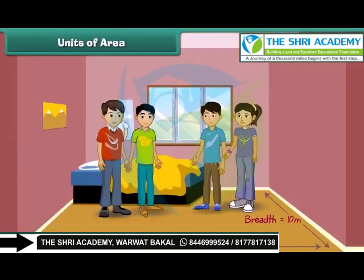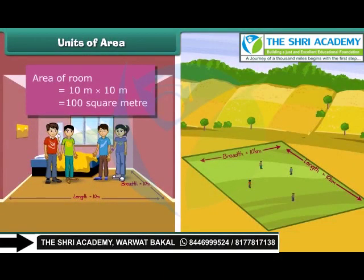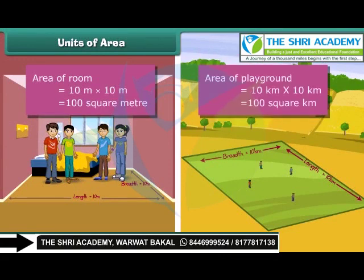How many children can stand in a square room of side 10 meters? And how many children can stand in a square playground of side 10 kilometers? Clearly, more children can be adjusted comfortably in the playground. The area of the room is 100 square meters, while the area of the playground is 100 square kilometers. Thus, square kilometer is a bigger unit for measuring area than square meter.